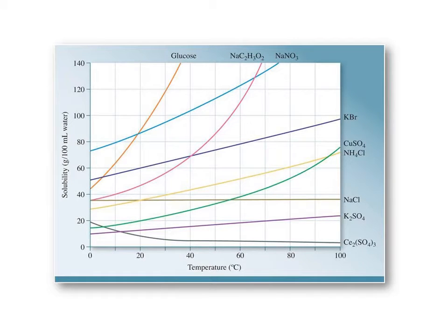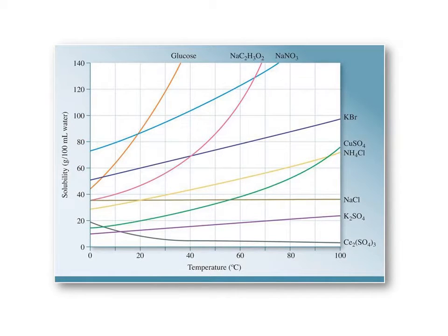The first factor I'm going to focus on is temperature. Solubility will be affected depending on the temperature of the solvent. There's a graph in your book where the y-axis shows solubility in grams per 100 milliliters of water. We're looking at mostly ionic compounds, but glucose is also included. What happens to the solubility of each as you increase the temperature?